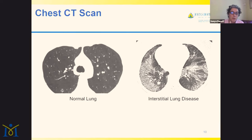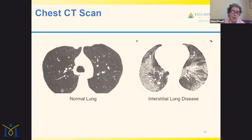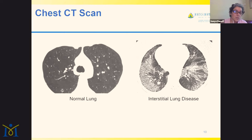CT scans: many of you have had them. On a normal CT scan at mid-chest level, you see a large area of black with little white flecks — that's the lung, which is filled with air. Air doesn't reflect x-ray beams, so it appears black. In the center you'll see a black tube — that's the trachea. The lungs are black with little white flecks, and that's the supporting tissue of the lung, called the interstitium.